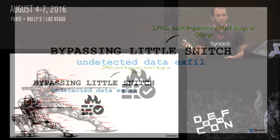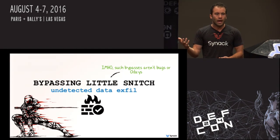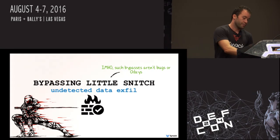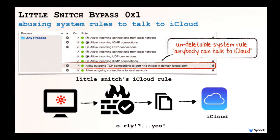So how can we bypass Little Snitch — exfiltrate data without being detected or connect to a C2 server without generating popups? First, look at Little Snitch's firewall rules. There is a default, undeletable system rule that says anyone can talk to iCloud. We can reverse engineer the iCloud protocol — it's JSON-based — and set up a command and control server on iCloud. Our custom malware connects to that C2 on iCloud, Little Snitch sees the traffic but won't alert because it conforms to the rule.